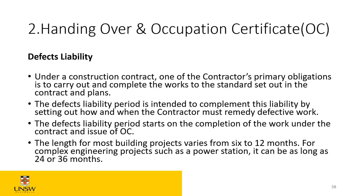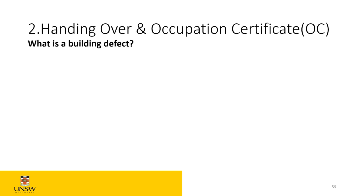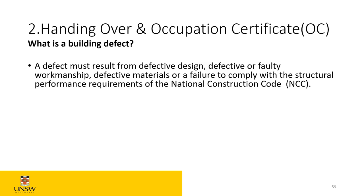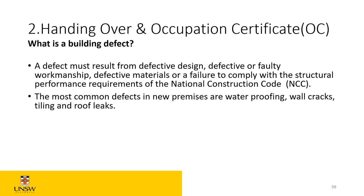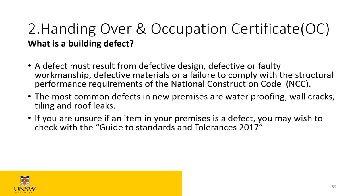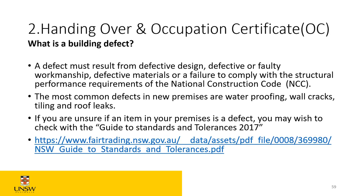A defect must result from defective design, faulty workmanship, defective materials, or a failure to comply with the structural performance requirements under the NCC. The most common defects in new premises are waterproofing, wall cracking, tiling issues, and efflorescence. If you're unsure whether something is a defect, there are guidelines and tolerances — from Fair Trading — that you need to reference. Sometimes a little cracking is acceptable as buildings settle, but when you measure a major crack against the tolerance guidelines and it qualifies as a defect, you can call the builder to fix it.